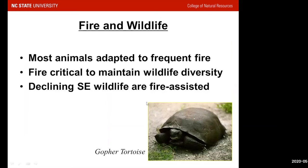From research and experience, most of our animals in the southeastern United States are adapted to frequent fire. If we want to maintain wildlife diversity on a large scale, especially attracting less common species like the gopher tortoise, we need fire. Many of the wildlife in the southeastern United States that are declining, threatened, or rare are associated with fire — including the red-cockaded woodpecker, indigo snake, flatwood salamander, gopher tortoise, northern bobwhite, and so on.